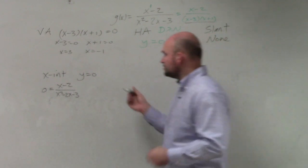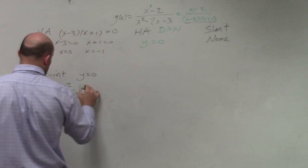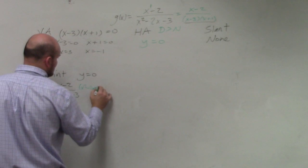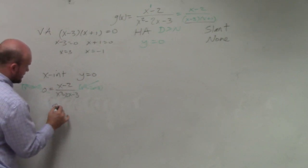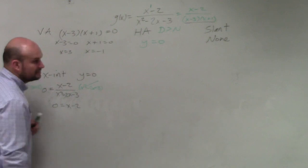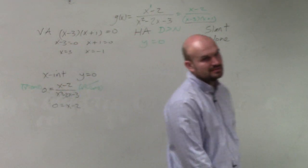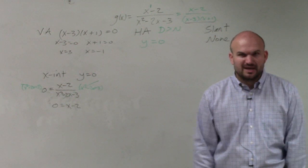Correct? So what I'm going to do is multiply by my denominator on both sides. Therefore, I get 0 equals x minus 2. Can I now solve for x? Yeah, it's easy, right?